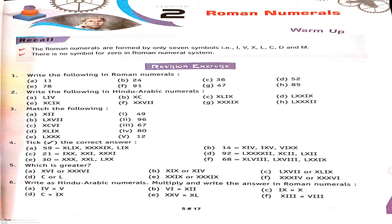Roman numerals are formed using only seven symbols. We use only seven symbols: I, V, X, L, C, D and M. And zero — we do not use any Roman numeral for zero.